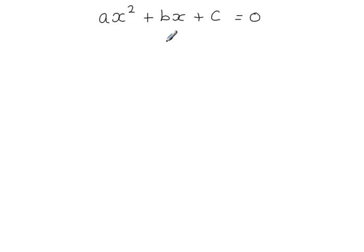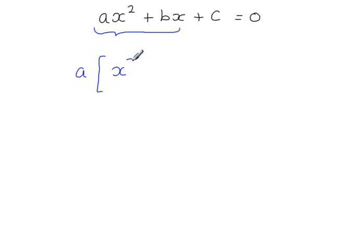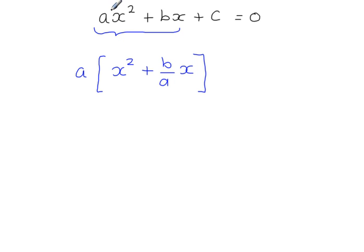I'm going to complete the square for these two terms. The coefficient of x squared is not 1, so the first step is to divide both of these terms by a. So I've divided both terms by a, and I've multiplied by a on the outside of the brackets here, so nothing's changed. A times x squared gives you this; a times b over a times x will give you bx, plus c, equals 0.